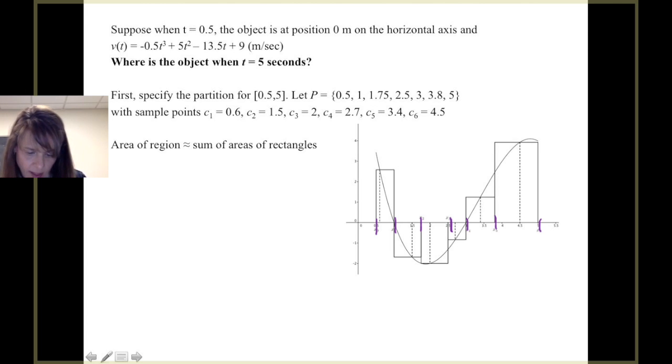So our sample points, we can see, are given by the dotted line. So here's 0.6, there's 1.5, 2, and notice, for instance, 2 falls in that third subinterval.